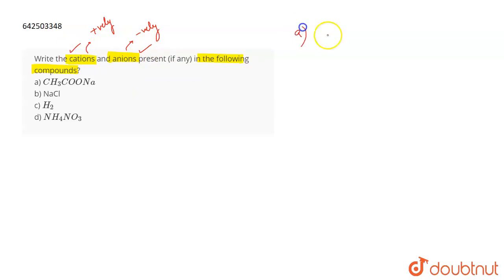If I talk about the first one, which is CH3COONa, it is made up of CH3COO negative and Na plus. So Na plus is the ion which is positively charged and acetate ion is the anion.